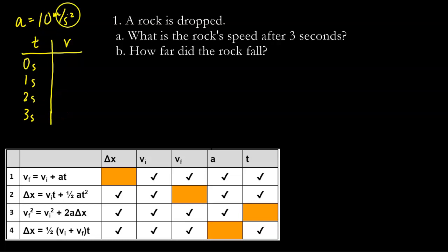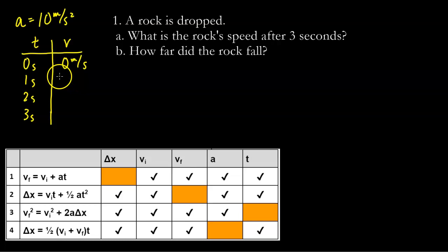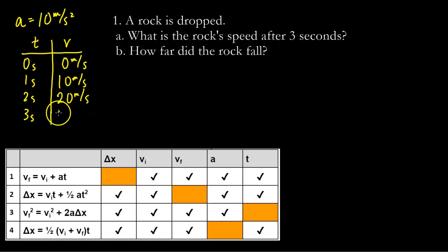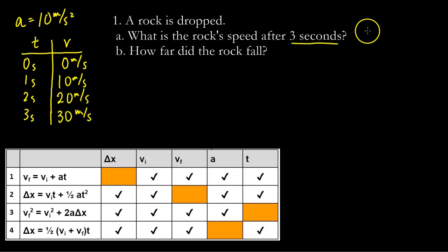What 10 meters per second squared means is that every second the velocity changes by 10 meters per second. So we start with zero meters per second, and in one second it's going to be 10 meters per second. Two seconds will be 20 meters per second, three seconds will be 30 meters per second. So at three seconds the velocity will be 30 meters per second down — the speed will be 30 meters per second.